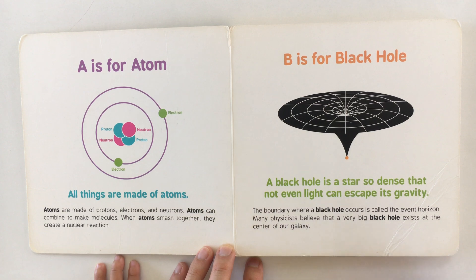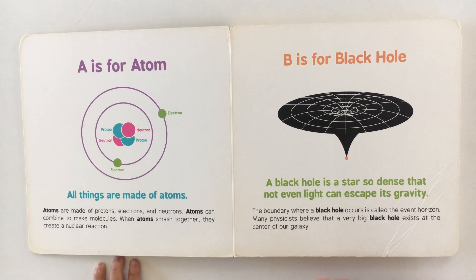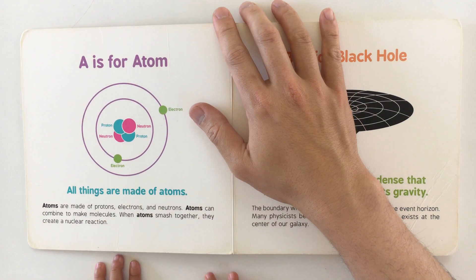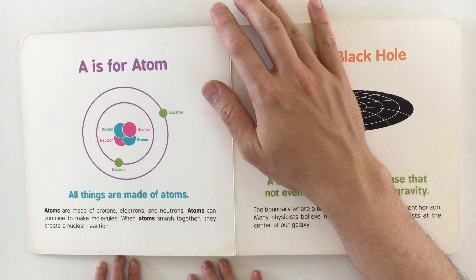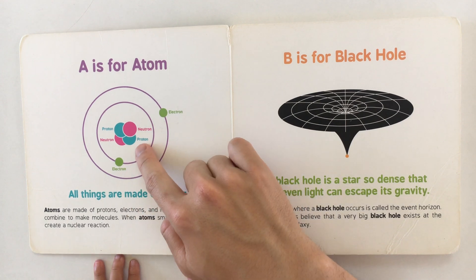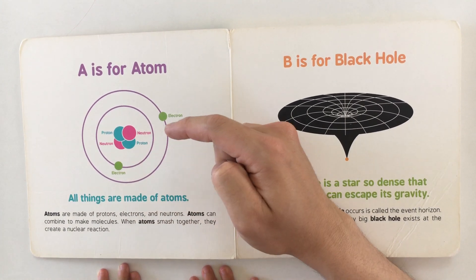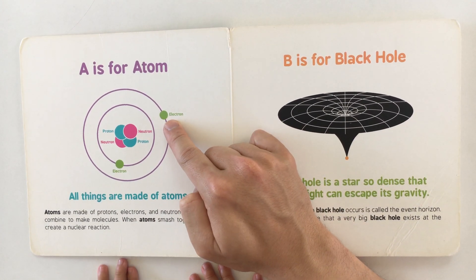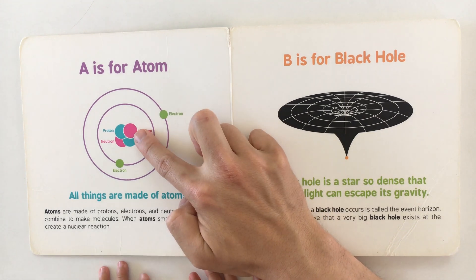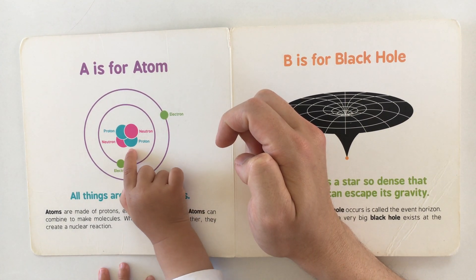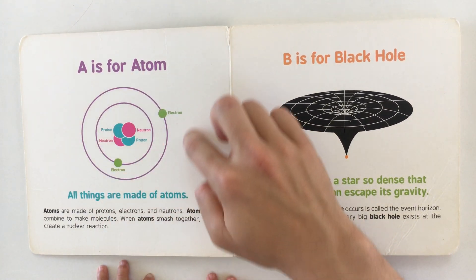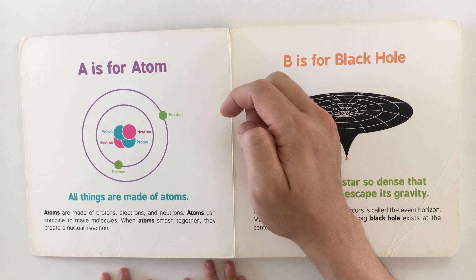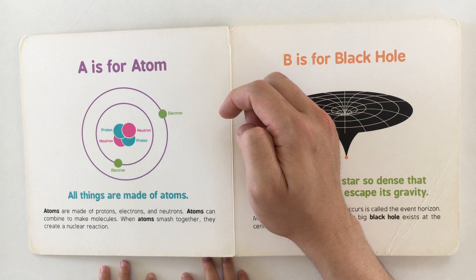Atoms are made of protons — the blue ones — electrons, which are the green ones, and neutrons, which are the pink ones. When atoms smash together they can create a nuclear reaction.